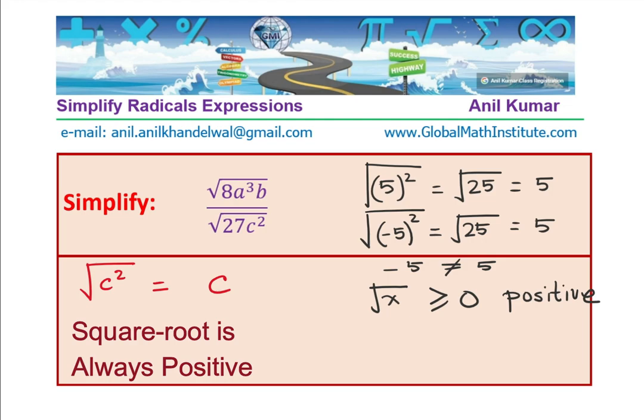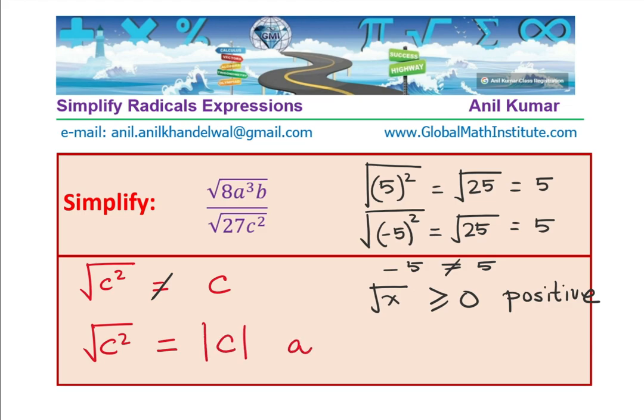And therefore, what is square root of c²? Square root of c² is not equal to c. Square root of c² is equal to absolute value of c, always positive. Is that clear to you? Perfect. Correct?